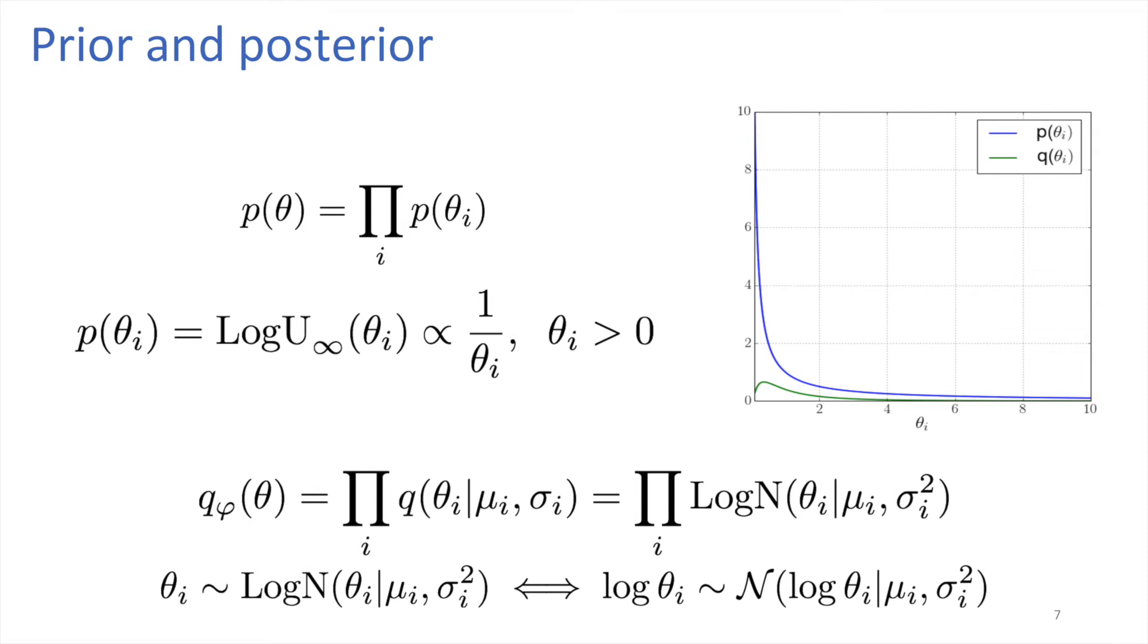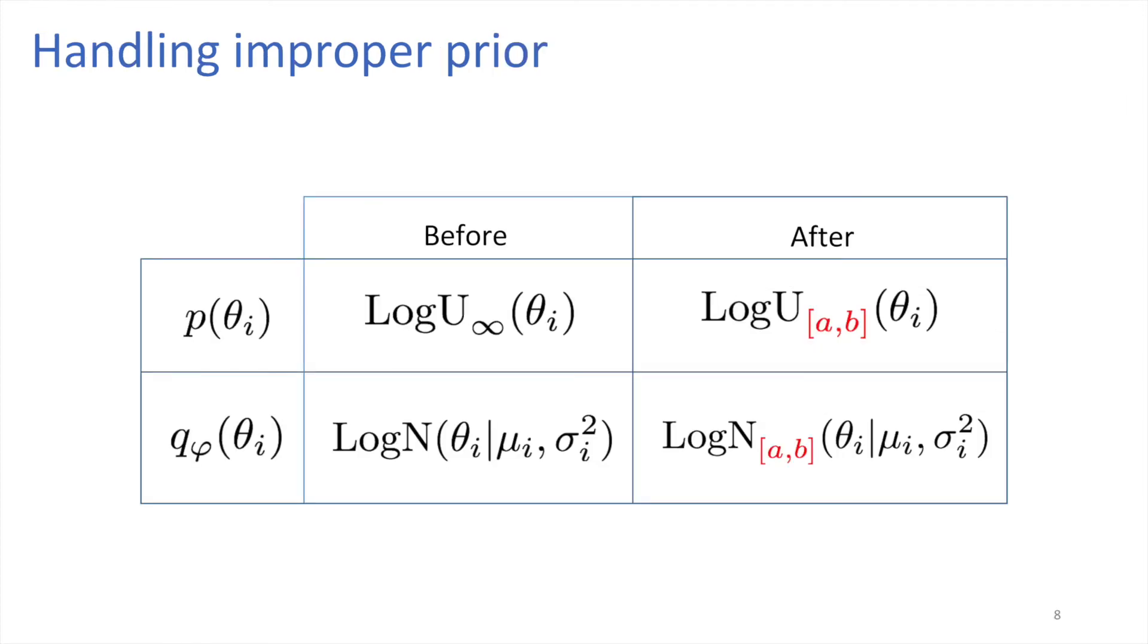A random variable follows log-normal distribution if the logarithm of this random variable is distributed normally. The log-uniform prior is improper, which in this case leads to an ill-posed model and a degenerate variational posterior.